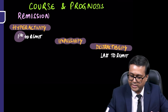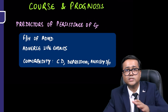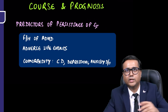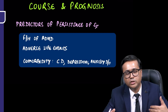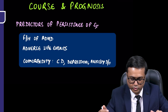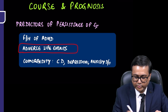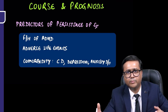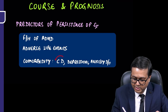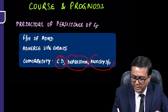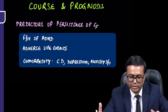Predictors of persistent symptoms into adulthood include family history of ADHD, adverse life events such as death of a parent, and comorbidities such as conduct disorder, depression, and anxiety disorder. These factors predict that symptoms will continue even in adulthood, and recognizing them is important for long-term management.